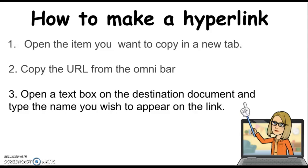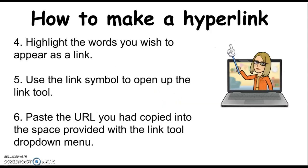Let's review the steps I used to make that hyperlink. First, I opened the item I wanted — I opened up YouTube and found what I wanted. Then I copied the URL, that web address, from the omnibar by highlighting it. Then I went to my destination document and opened a text box and typed the name I wanted my link to have. Next, I highlighted those words and saw another menu pop up with the link symbol. I clicked the link symbol to open the link tools, then pasted the URL into the space provided. And that's it — that's how I make a link inside my document.